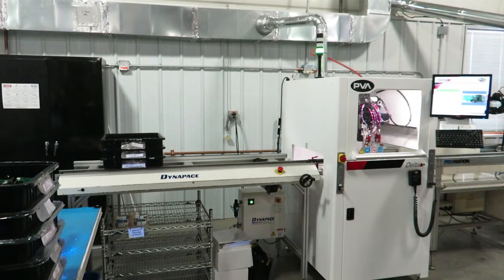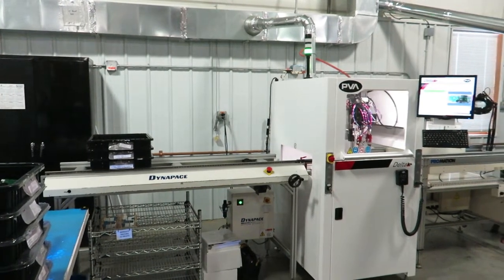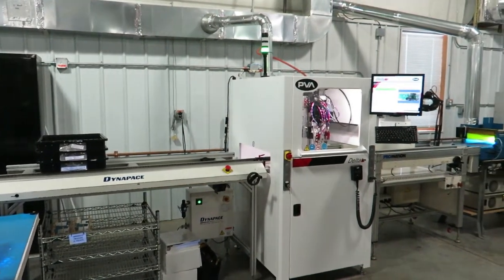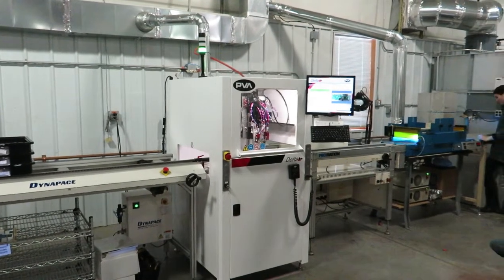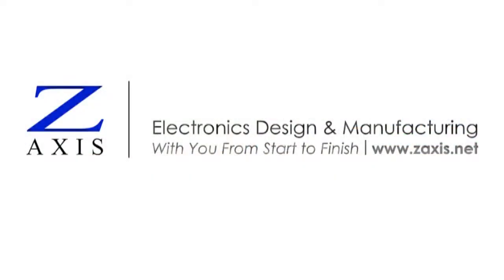Robotic conformal coating is just one of the advanced processes we use at Z-axis to produce high quality, high reliability boards for our contract manufacturing customers. Contact us to learn more.